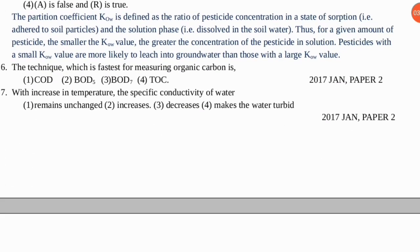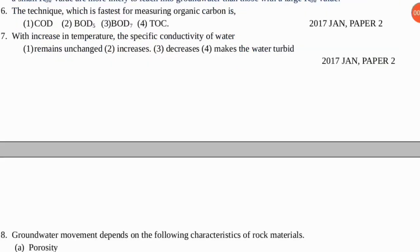Question six: which technique is the fastest for measuring organic carbon? The correct option is number four — total organic carbon (TOC) is the fastest way to measure organic carbon compared to other parameters. Question seven: with an increase in temperature, what is the change in specific conductivity of water? The correct option is B — as temperature increases, the specific conductivity of water also increases.